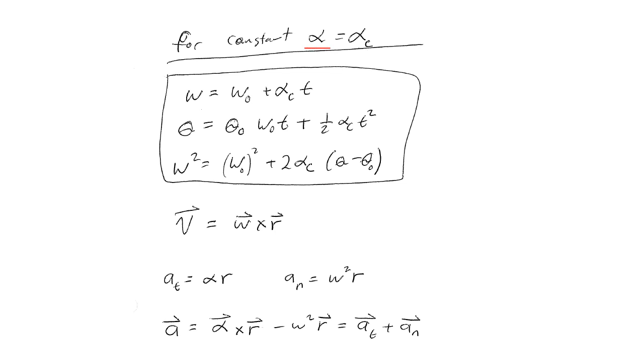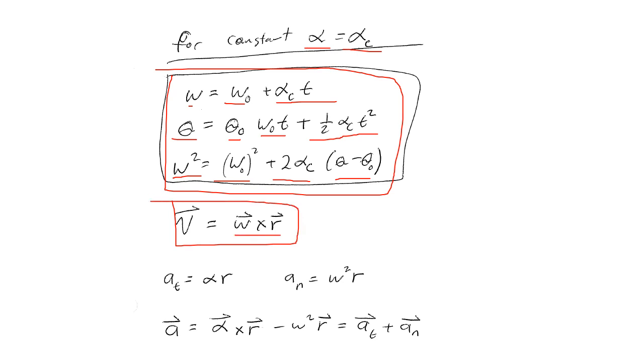So for a constant alpha, alpha is equal to alpha sub c for a constant alpha there, we have the following relationships. So we can use these right here. Omega is equal to our omega naught plus alpha c t, our constant acceleration, angular acceleration times time. Our theta is equal to our initial theta naught times omega t, omega naught t plus one half alpha sub c t squared. And omega squared is equal to omega naught squared plus two alpha c times theta minus theta naught. Again, recall, if we're looking with velocities in terms of our omega here, velocity is equal to omega times r. It's a cross product there. And our a sub t, the tangential, and our a sub n, our normal, are given by the relationships here, alpha r and omega squared are there. So therefore, our acceleration term here is equal to alpha cross r minus omega squared r is equal to a sub t plus a sub n, where we can plug in for our a sub t's and our a sub n's with those relationships right there.